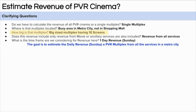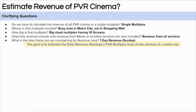The third question is about the size of the multiplex — let's assume it is large with 10 screens total. The fourth question is about the type of revenue: primary services only or all ancillary services included? Let's assume all types of revenue. The fifth question is about timeframe: let's assume a single day on a weekend like Sunday. The goal is to estimate the daily revenue of PVR multiplex in a busy area from all types of services.